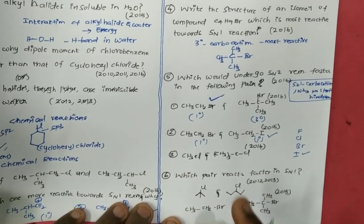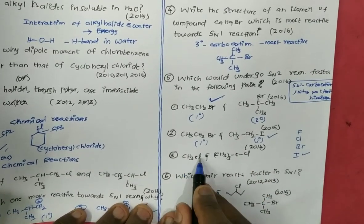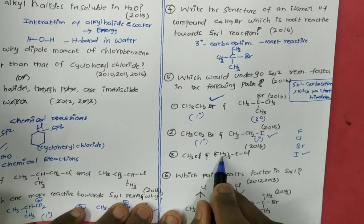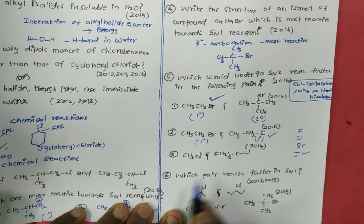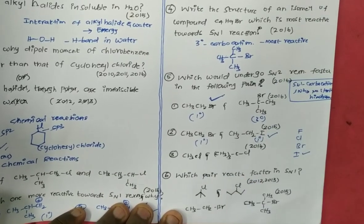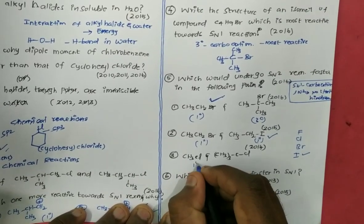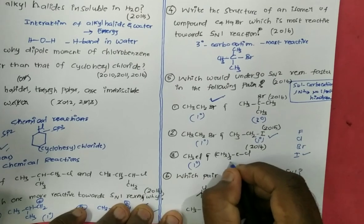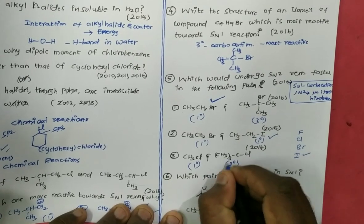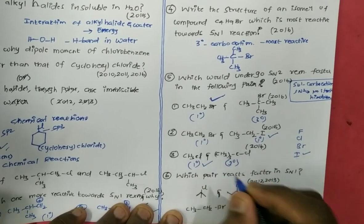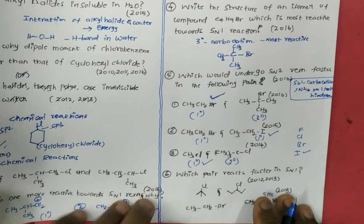For the third case: comparing CH3Cl with a 3° alkyl halide in SN2 — since CH3Cl is effectively 1° (primary) and the other is 3°, CH3Cl will obviously undergo SN2 faster due to less steric hindrance.